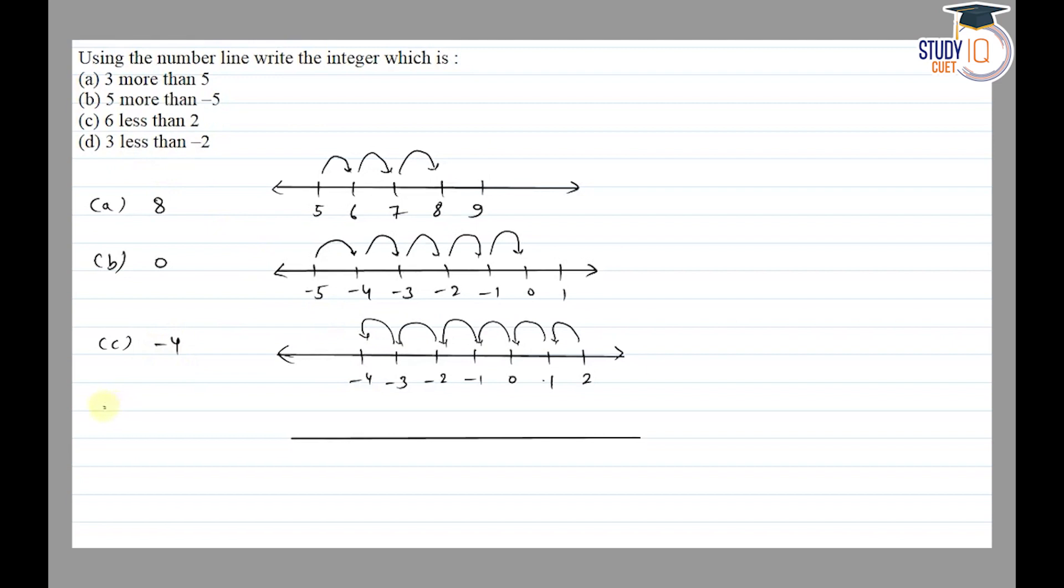Part d: 3 less than minus 2. Less than means we move left accordingly, so minus 2, minus 3, minus 4, minus 5. So 3 less than minus 2, from minus 2 we move 3 in the left direction: minus 3, minus 4. So the answer is minus 5.